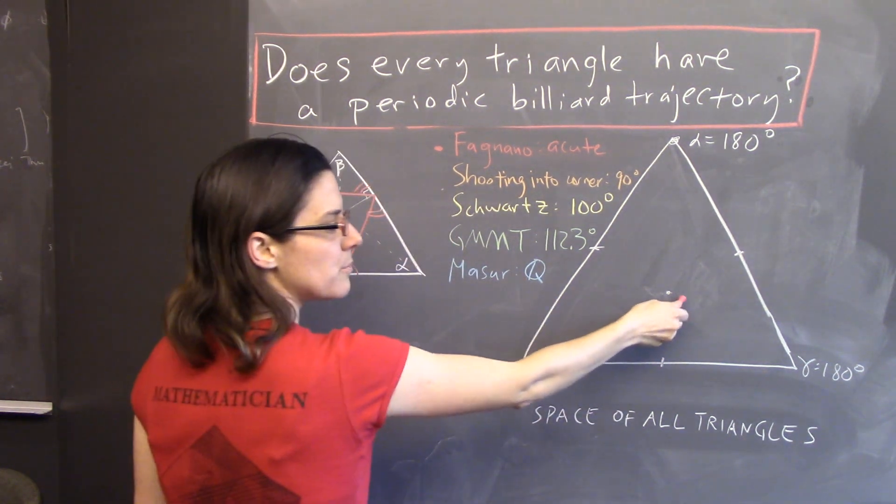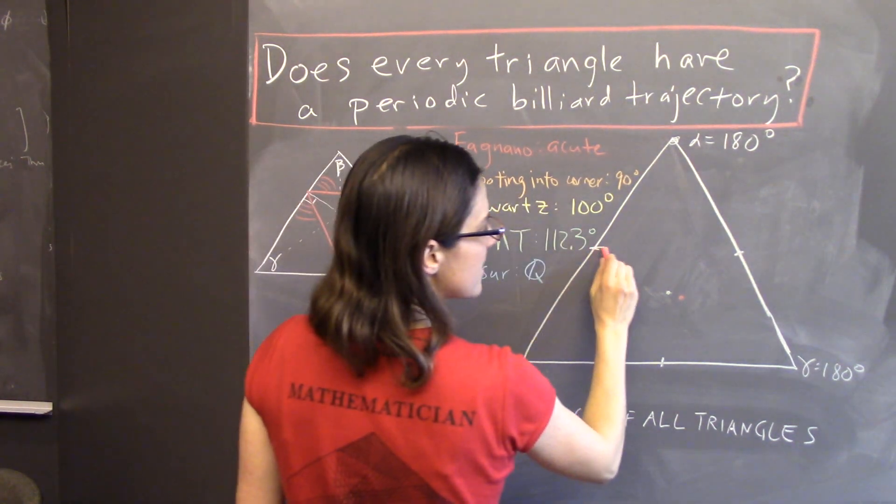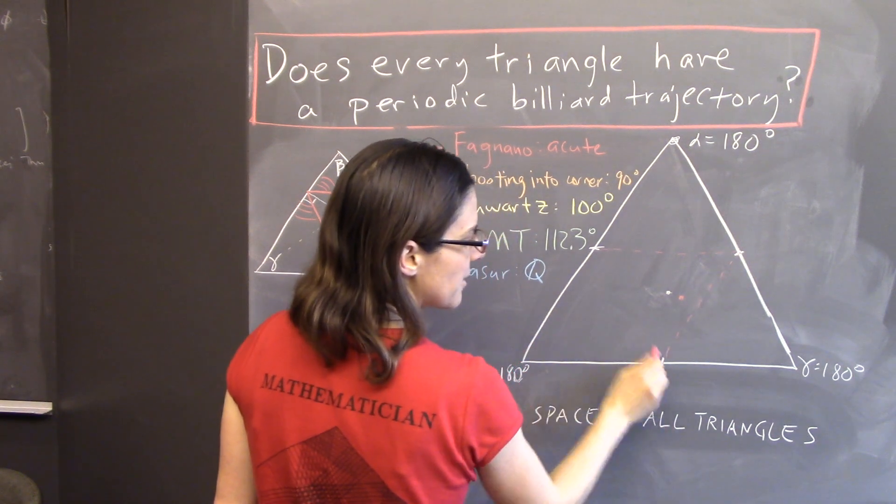So, this triangle is represented by one point in this space of all triangles, and the Fagnano trajectory tells us that every acute triangle has a periodic billiard trajectory.